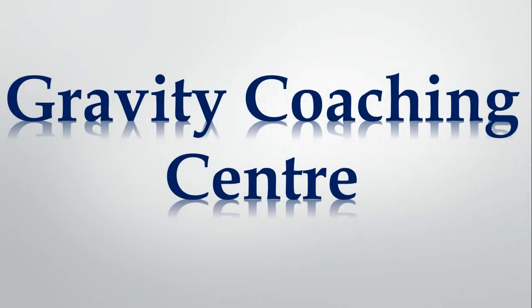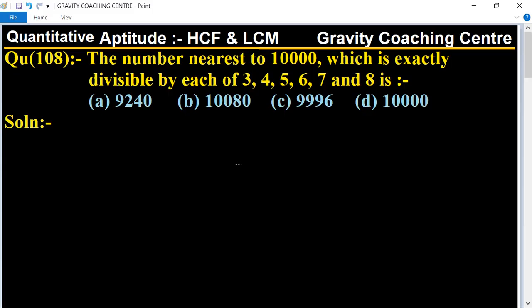Welcome to our channel Gravity Coaching Centre, quantitative aptitude chapter HCF and LCM. Question number 108: the number nearest to 10,000 which is exactly divisible by each of 3, 4, 5, 6, 7 and 8 is. First of all, we will find the LCM of these numbers.